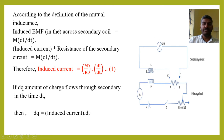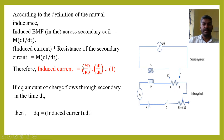The induced EMF in the secondary circuit equals the induced current multiplied by the resistance of the secondary circuit, which equals M × dI/dt. Therefore, the induced current can be written as (M/R) × dI/dt, where R is the resistance of the secondary circuit. Let us take this as equation 1.